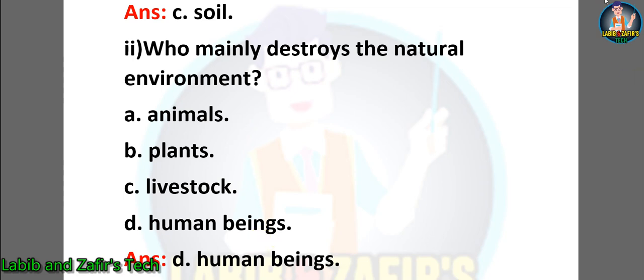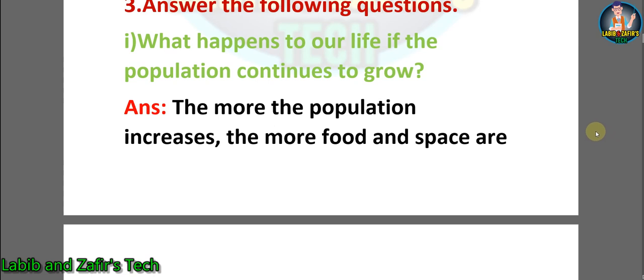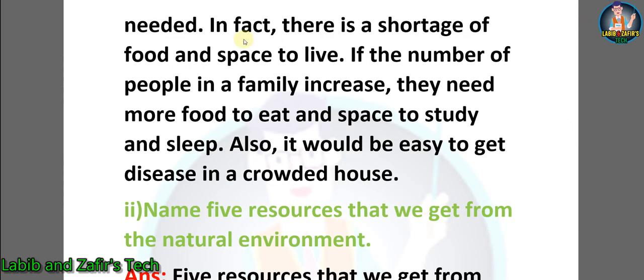Now let's go through some question answers. Number one: what happens to our life if the population continues to grow? Answer: the more the population increases, the more food and space are needed. In fact, there is a shortage of food and space to live. If the number of people in a family increases, they need more food to eat and space to study and sleep. Also, it would be easy to get disease in a crowded house.